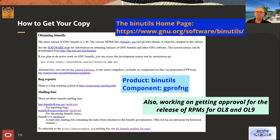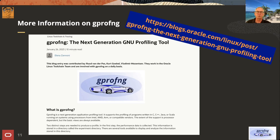This is how you get your copy — the general binutils page. We're also working on getting RPMs out in addition to this, as we're very keen on making it as easy as possible to install GPROFNG on your system. There's also a blog that came out a couple of weeks ago with more information on GPROFNG, available on the Oracle blogging website.